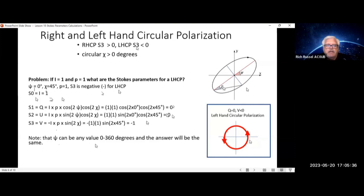Now, psi could be any value between 0 and 360 degrees here, because if this is a circle, it can go all the way around and it still looks the same. So here's your diagram with a left-hand circular polarization going around this direction.